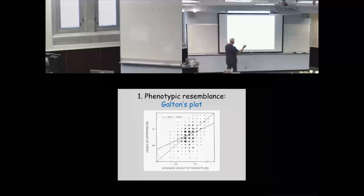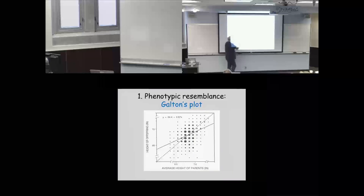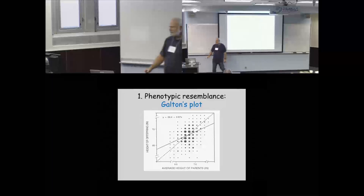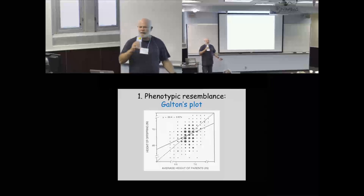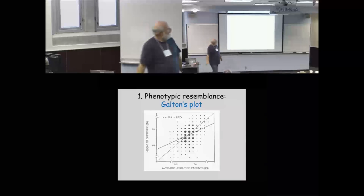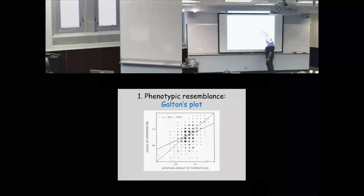Francis Galton invented the concept of the average of the two parents — he called it the mid-parent, just the average of mom and dad. If you look at a point, that is a pair of parents whose average height was about 66 inches, and the value on the other axis is the average height of their offspring — called mid-offspring. There is a regression line going through the points.